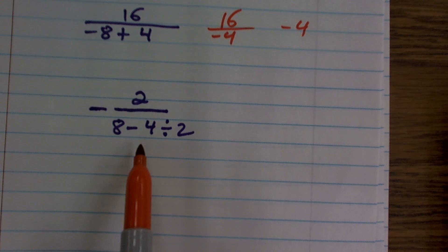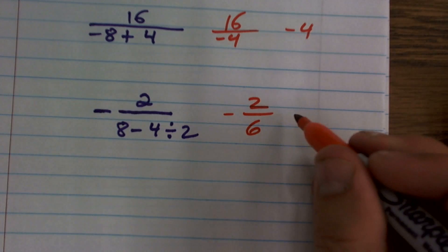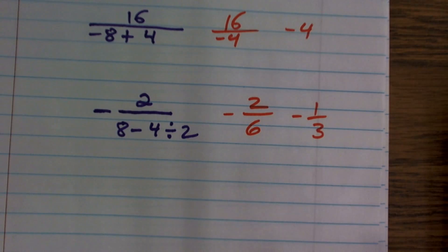8 minus 2 is going to leave me with a 6. So I have negative 2 divided by 6, which I can reduce down to a negative 1 third.